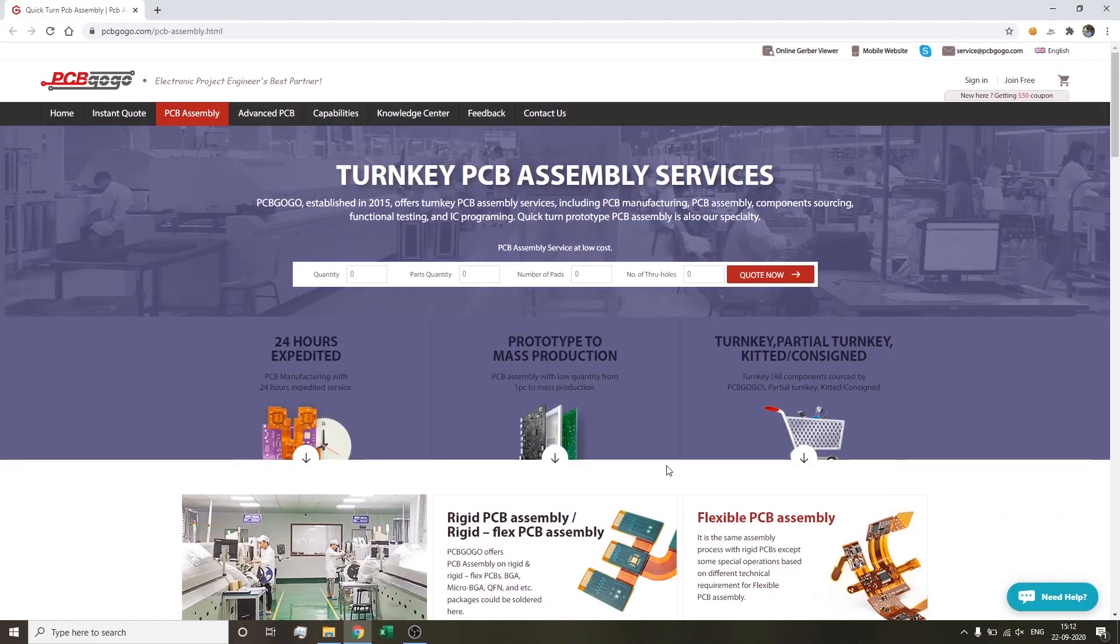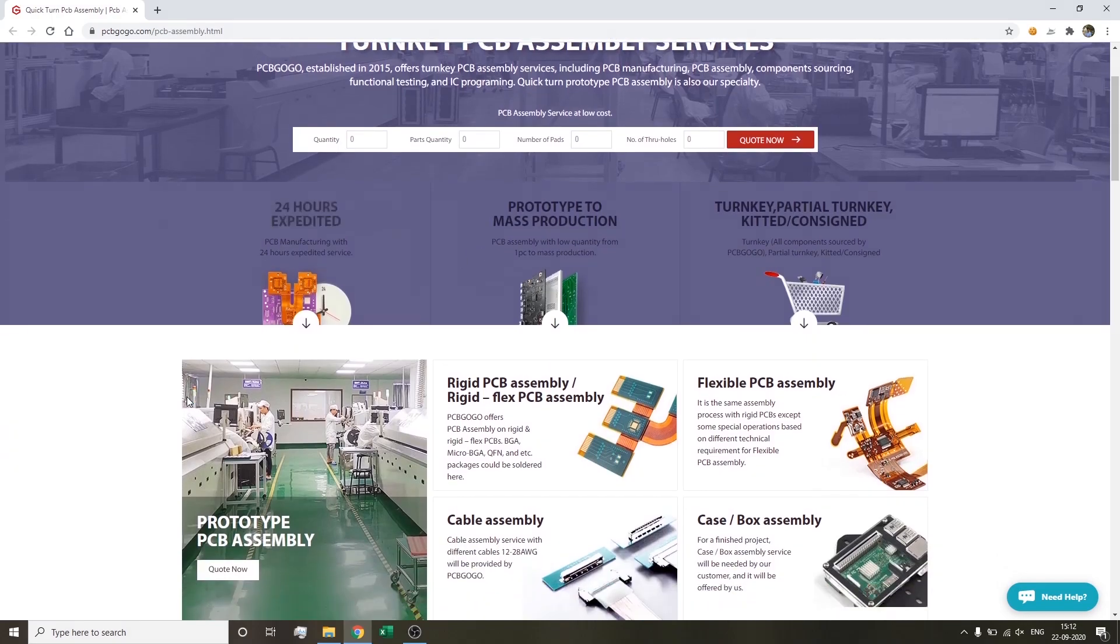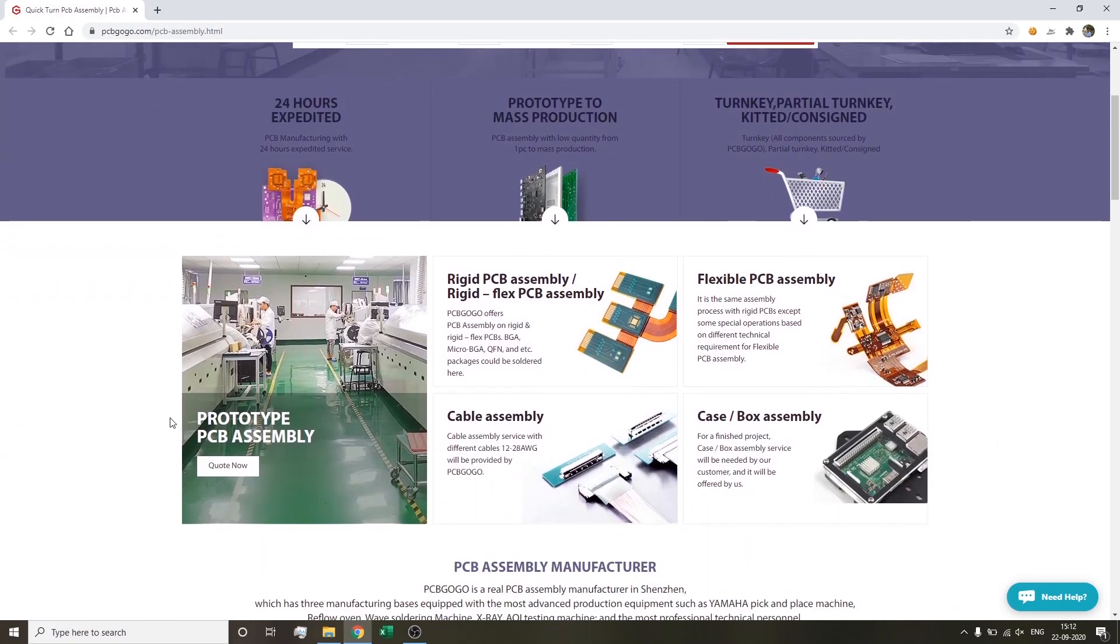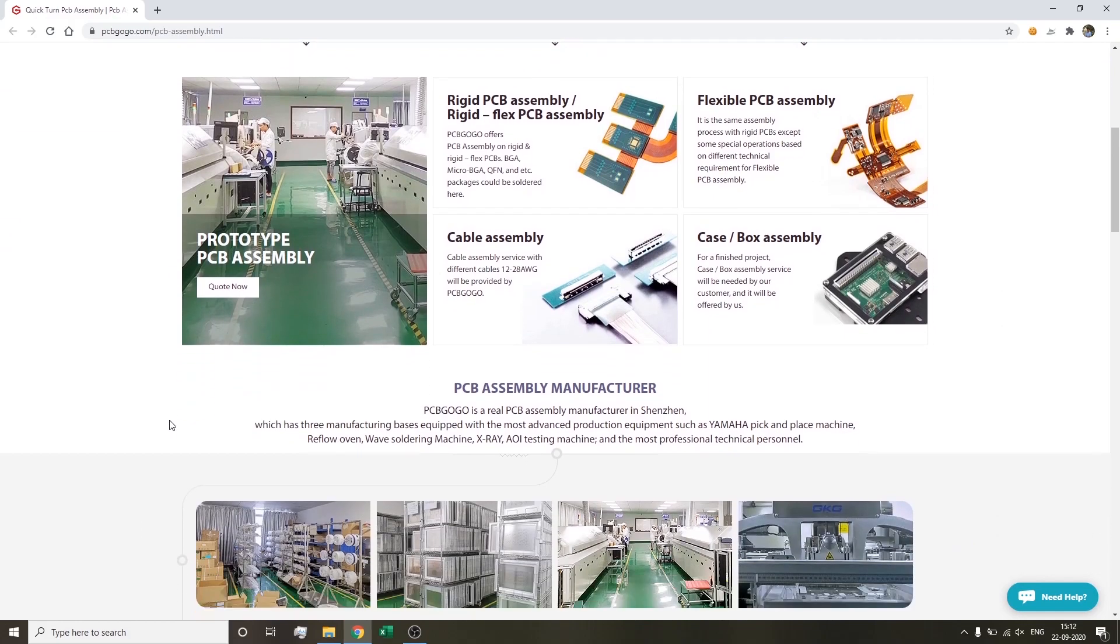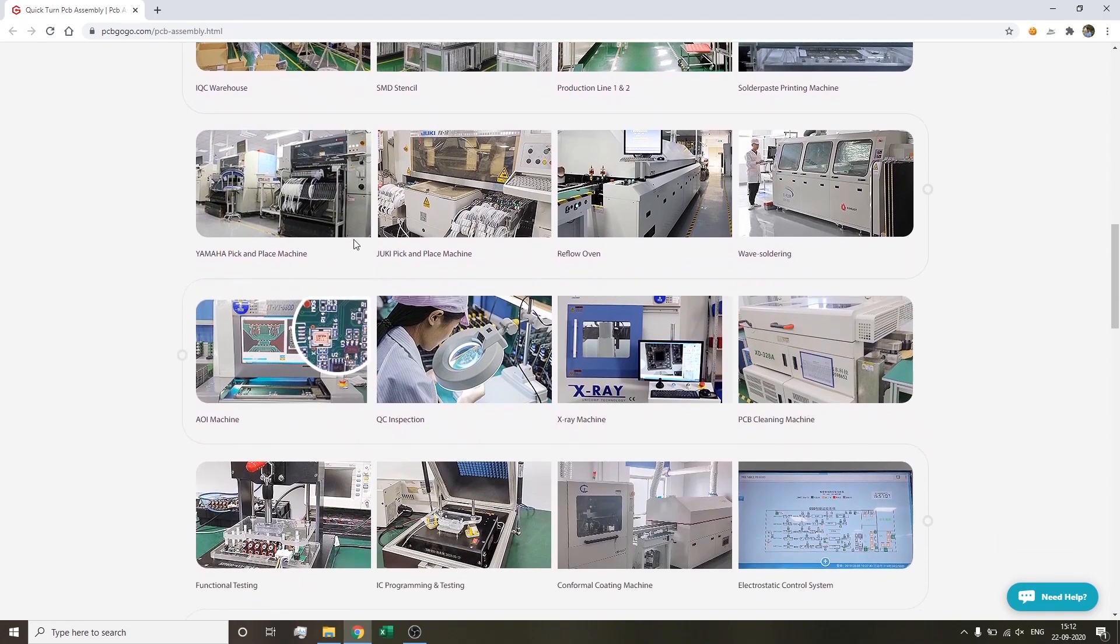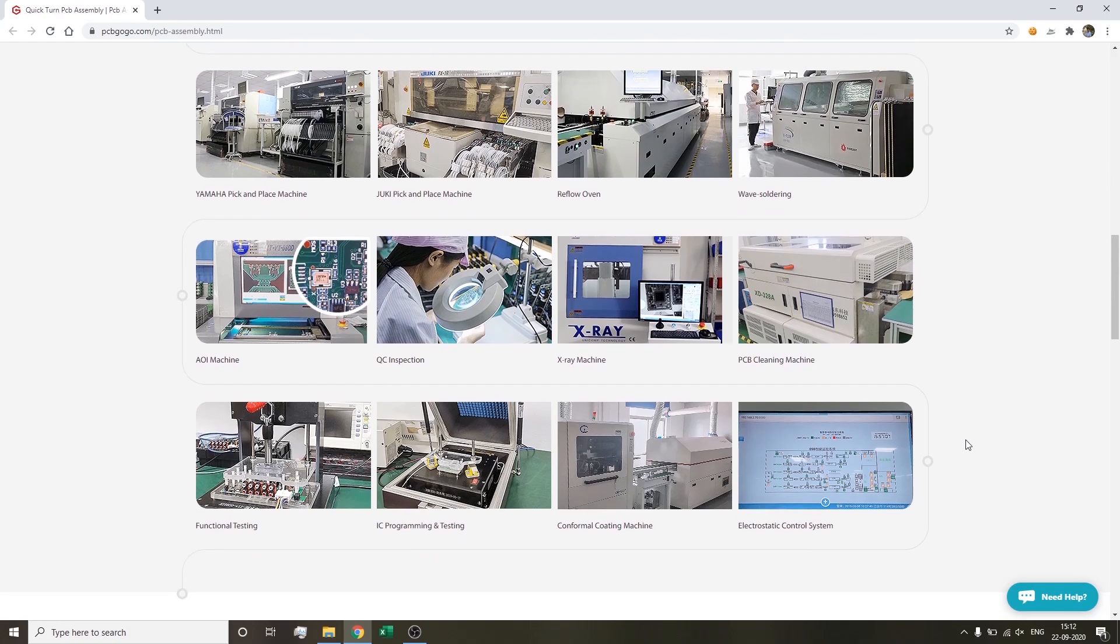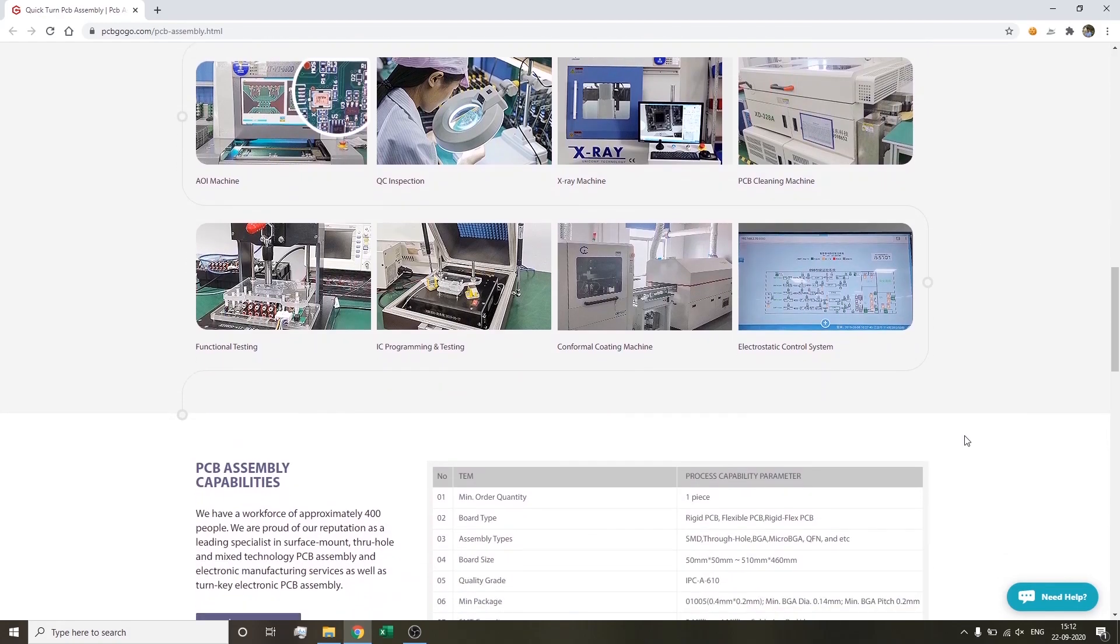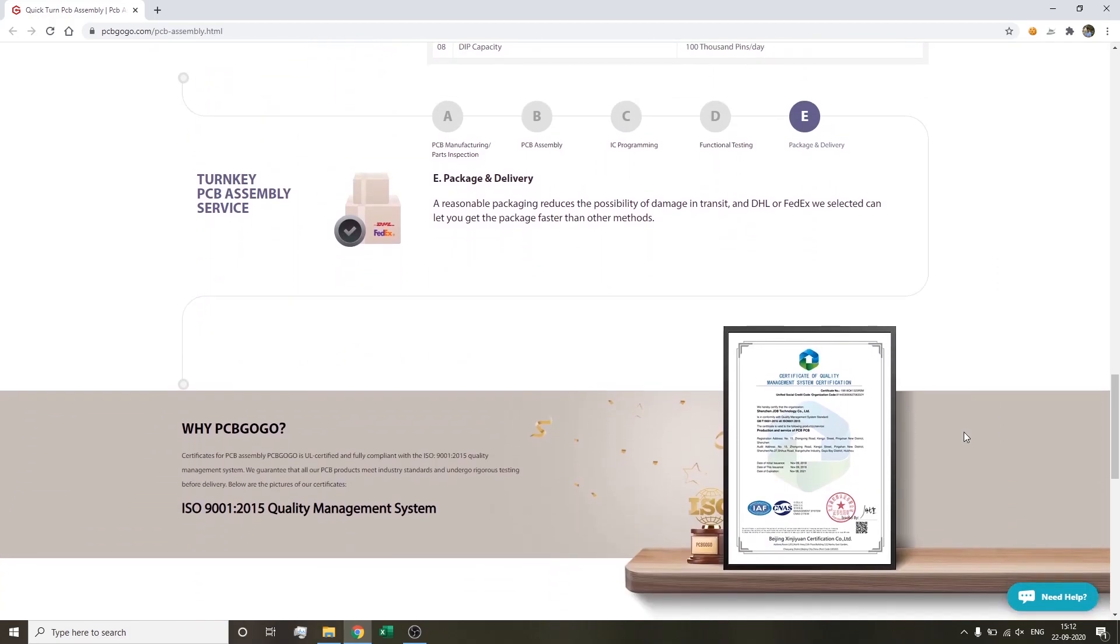PCB GoGo is the leading supplier of turnkey PCB assembly services including PCB manufacturing, PCB assembly, component sourcing, functional testing, and IC programming. They have been in the PCB industry for over 10 years and are equipped with the most advanced production equipment such as Yamaha pick and place, reflow oven, wave soldering, x-ray, AOI testing, and the most professional technical staff. PCB GoGo provides order service from prototype to mass production.